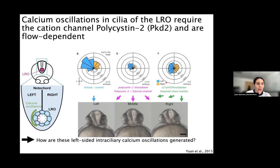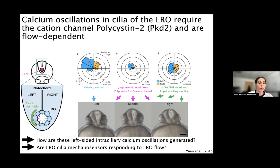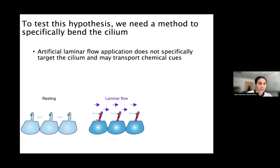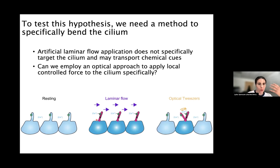These results lead to the following questions: how are these left-sided intracellular calcium oscillations generated? Because they take place at the site of the LRO where there is the highest amount of flow — on the left anterior side — we hypothesize that LRO cilia are mechanosensors responding to the LRO flow. To test this hypothesis, we needed a method to apply local and precise force on cilia. Artificial laminar flow would not specifically target the cilium and could also transport chemical cues, making it impossible to decipher mechanosensation from chemosensation. So we wondered whether we could apply an optical approach.